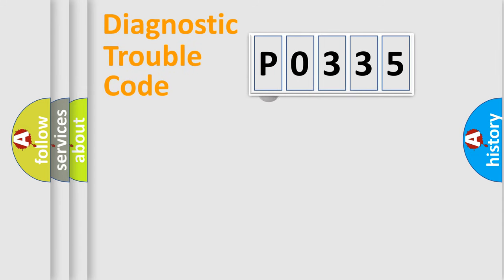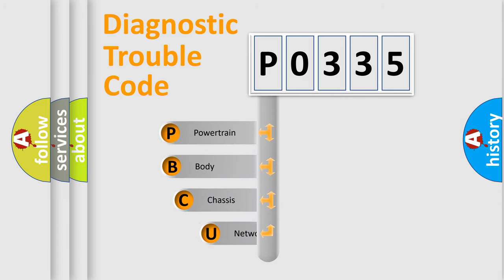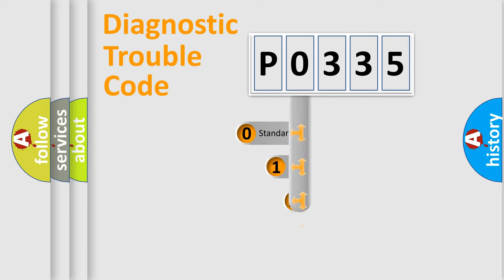First, let's look at the history of diagnostic fault code composition according to the OBD2 protocol. We divide the electric system of an automobile into four basic units: powertrain, body, chassis, and network. This distribution is defined in the first character of the code.